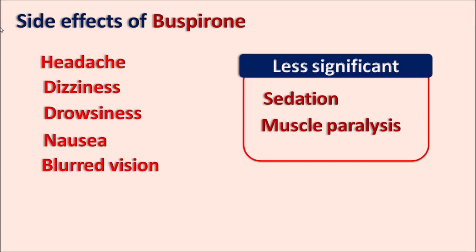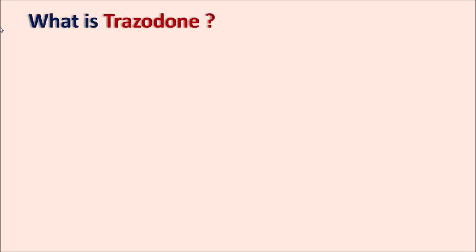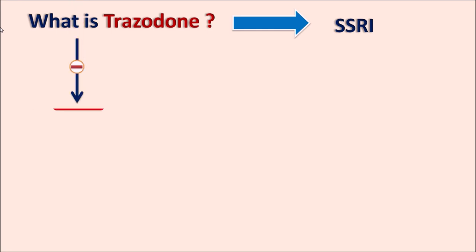Now let us see the details about trazodone. Trazodone is classified as an SSRI — a selective serotonin reuptake inhibitor. This drug inhibits the reuptake of serotonin, and at the same time it also blocks the postsynaptic 5HT2 receptors. Both of these actions may lead to antidepressant activity.